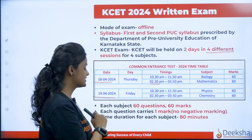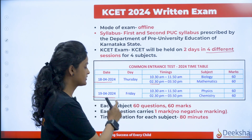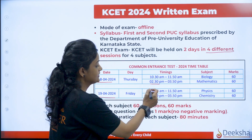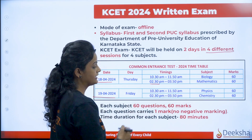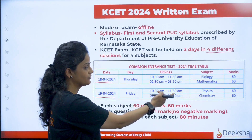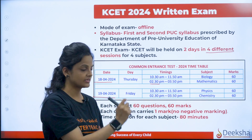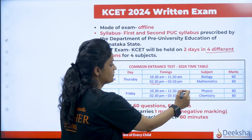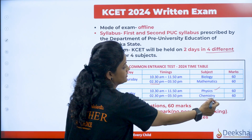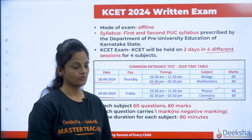And the next day, you will have the other two subjects — that will be on Friday. Same, 80 minutes each subject, 10:30 to 11:50. Timing is the same. See the particular subject: first session you will be writing physics, second session you will be writing chemistry.